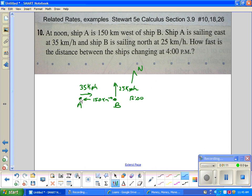Ship A is west and I'm going to make north up. Ship A is west of B, about 150 kilometers. This is at noon. I'm going to put 12 o'clock here so I don't forget. Ship A is sailing east, so it's sailing this way at 35 kilometers per hour. Ship B is sailing north at 25 kilometers per hour. How fast is distance changing four hours later?